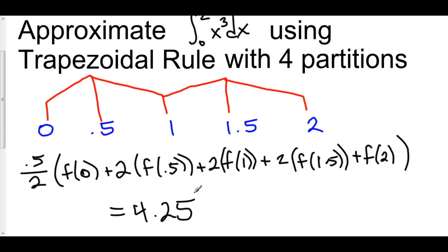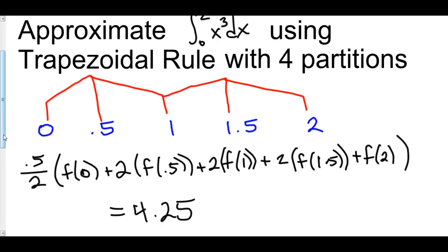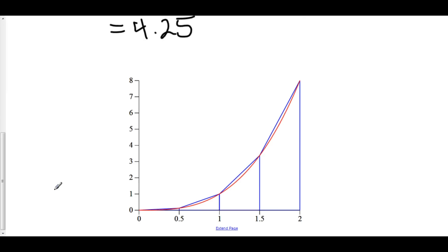Now, take a look at this. This is the actual graph. The red line is y equals x cubed, from 0 to 2.